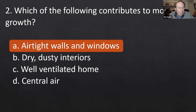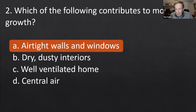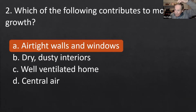A little air circulation in a home is a good thing. Some people make homes too airtight, which can cause problems. In a home built to be super tight, you really ought to put some sort of ventilation system in it to keep mold down. The type people are most concerned with is black mold. So airtight walls and windows contribute to mold growth.